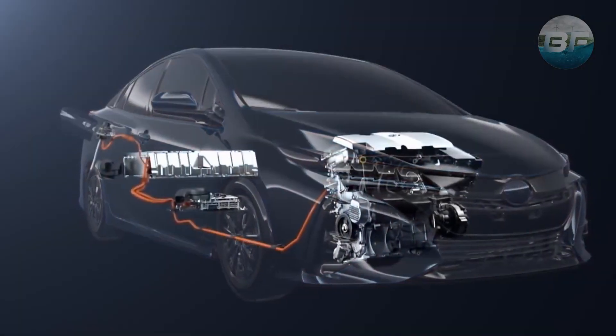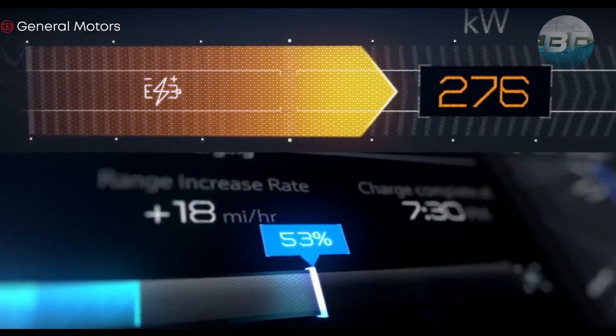Level 3 chargers, also known as DC fast chargers, can charge a battery to 80% capacity in around 30 minutes.